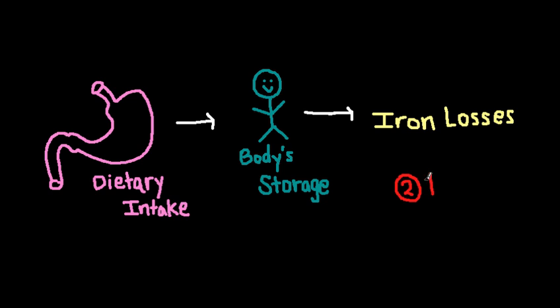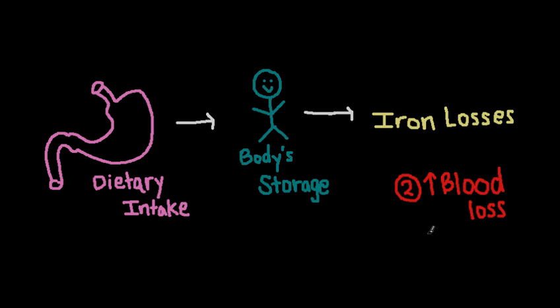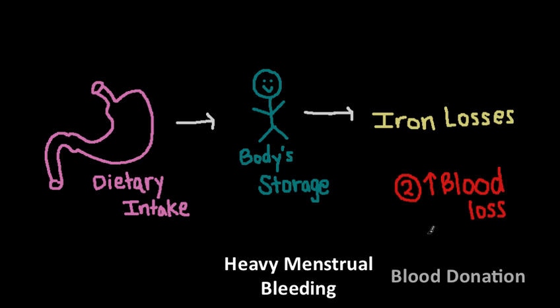Another way is increased blood loss. When you lose blood, you lose red blood cells, and in those red blood cells we have hemoglobin, which stores most of our iron. This would be the case of Beyonce's bank getting robbed. There are causes the patient may be aware of, like menstruation or frequent blood donation. But sometimes the patient may not even be aware of any blood loss — this would be the case in any stomach or intestinal disease.